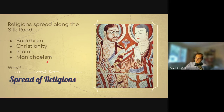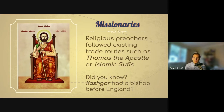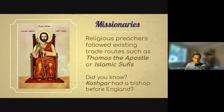Thomas the Apostle may have taken the overland route to India, creating the St. Thomas Christians — a community that continues to exist today. And did you know that China had a bishop before England did? The city of Kashgar had a bishop several hundred years before London had a bishop. There's also standard political influence: empires exerted influence over the religious practices of their subjects. The Kushan Empire and the Tang Dynasty both promoted Buddhism along the Silk Road; the Islamic Caliphates and sultanates promoted the spread of Islam; and the Delhi Sultanate helped spread Islam more permanently into what is now India.